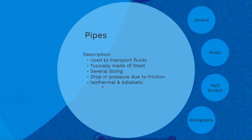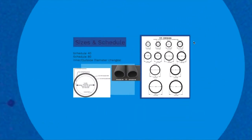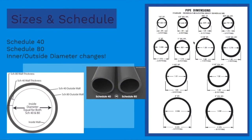We have plenty of transport types — either isothermal flow, adiabatic, and so on. Generally, we have several sizes and schedules. Here we have schedule 40 and schedule 80, which are the most common ones. As you can see, this one is a little bit thinner and this one is a little bit thicker. So what the schedule means essentially is the thickness of the wall.